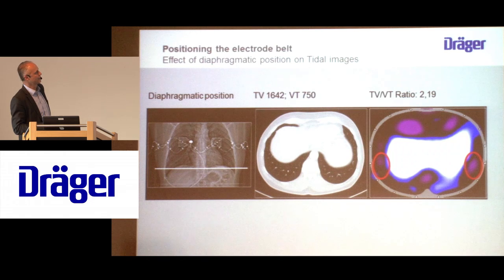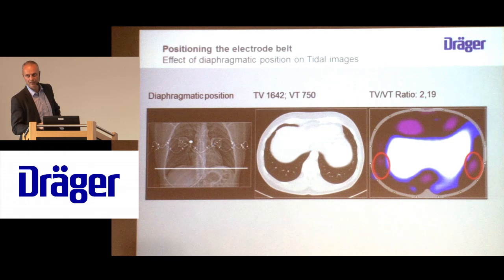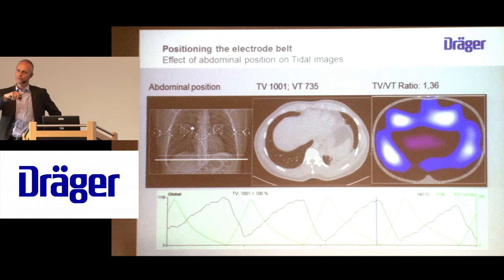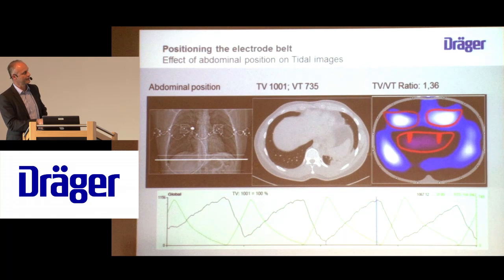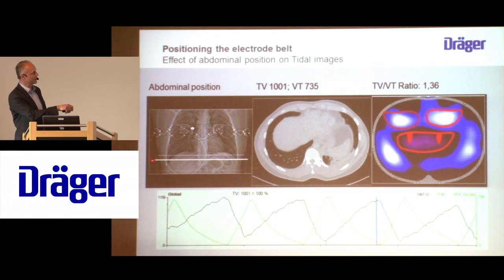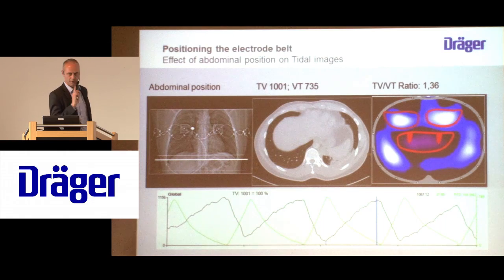Getting into a diaphragmatic belt position, you see lots of these purple spots around the ventilated areas, caused by diaphragmatic movement rather than ventilation. In the worst case — close to the scary image I showed on the first slide — all the signals in the volume waveform are completely inverted against the ventilation. That is what happens if you place the belt almost in an abdominal position. This is something you definitely need to avoid.